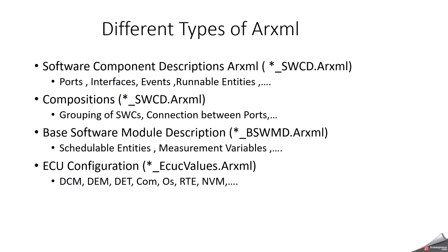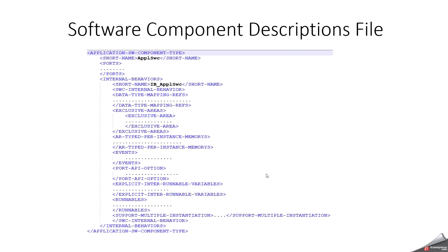An important file is the ECU configuration file, which comes with the name ecuc_values.arxml. This is used for all base software configuration — for example, DCM, DEM, COM, OS, RTE, NVM, etc. — all these come with the suffix _ecuc_values.arxml. This is not mandatory, just a recommended format, so that anyone working on the project can easily understand this file is especially for ECU configuration, specifically base software configuration.